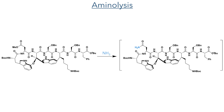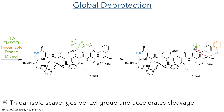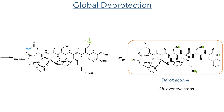The compound was first reacted with ammonia which amidated the methyl ester to form a primary amide. A global deprotection was then carried out using TFA, TMS triflate, thioanisole, and ethanedithiol. The TMS triflate activates the oxygens by silylation, and the thioanisole acts as a nucleophile to displace the benzyl group and suppress side reactions which are often observed when TFA/TMS triflate systems are used. These conditions cleaved all of the protecting groups present in the molecule and completed the synthesis of Darobactin A.